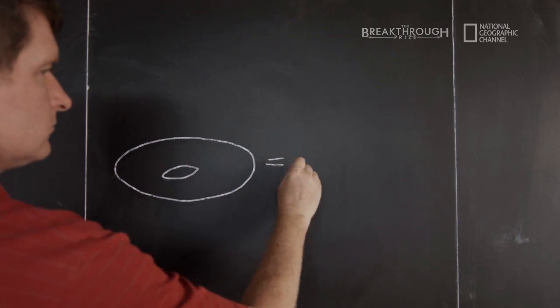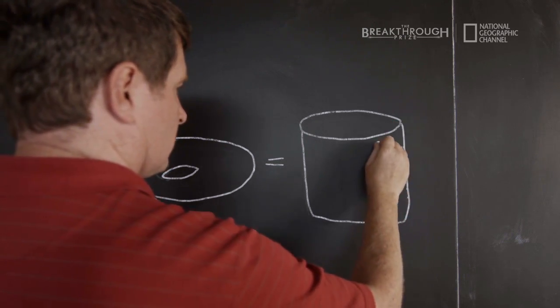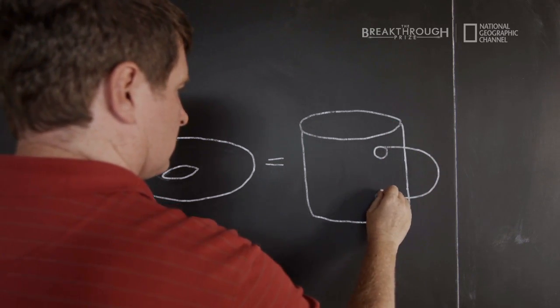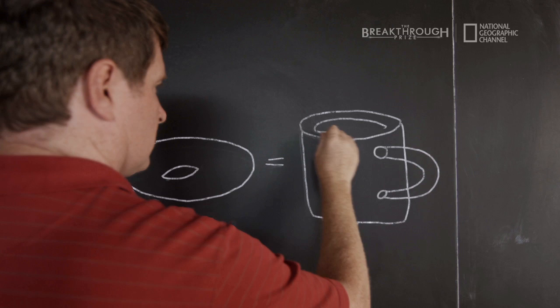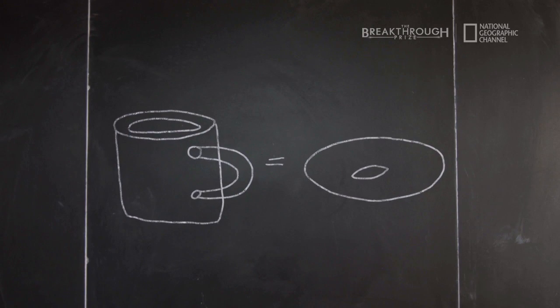There's a classic joke that a topologist can't tell the difference between a coffee cup and a donut. Both have just a single hole, and through deformation, the coffee cup can become a donut. As a consequence, we know the underlying properties are the same.